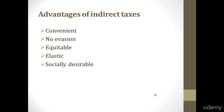Socially Desirable — Indirect Taxes are socially desirable. A government imposes more taxes on undesirable commodities like cigarettes, etc. Due to an increase in taxes, the prices of these commodities are increased and their use is discouraged.